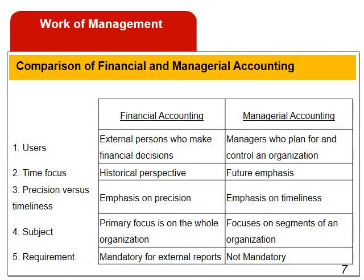There are five key differences between managerial accounting and financial accounting. Financial accounting reports are prepared for external users, while managerial accounting reports are prepared for internal users. Financial accounting summarizes past transactions, whereas managerial accounting has a strong emphasis on the future. Financial accounting focuses on precision, while managerial accounting aids decision makers by providing good estimates as soon as possible. Financial accounting is concerned with reporting for a company as a whole, while managerial accounting focuses on segments such as product lines, sales territories, divisions, and departments.